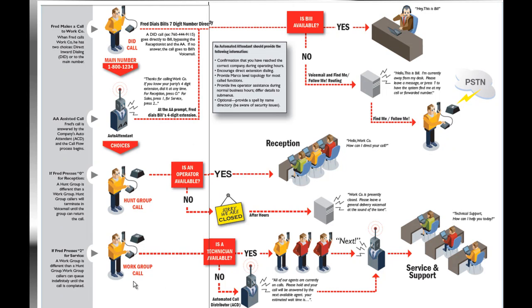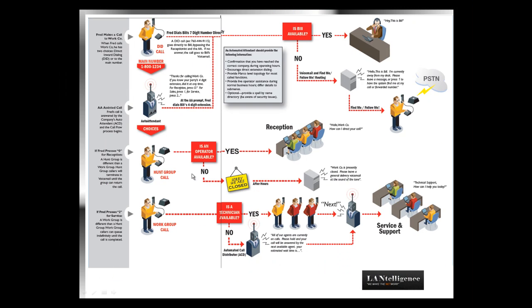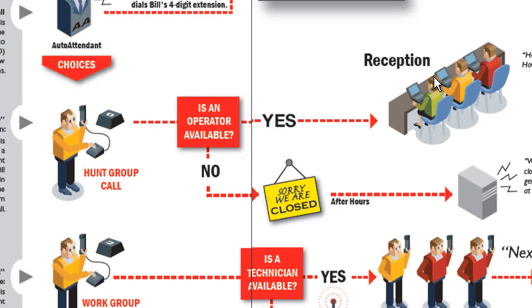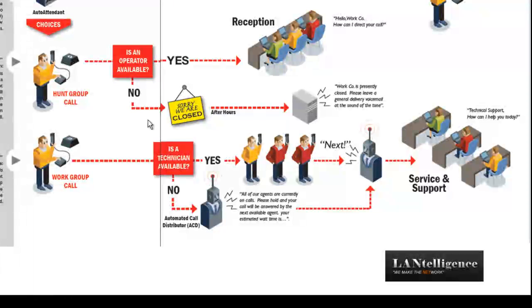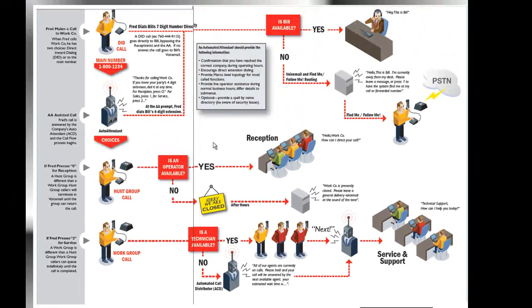Our goal is to lay out these solutions and make sure that if we're going to have an automated attendant, it is properly scripted so we can get it professionally recorded, and so we know the operating hours of your company. Keep in mind that each of these call processing solutions can be tied to a schedule. If a call comes in during business hours, it will be handled through the operator or reception hunt group, but after hours we'll route the call directly to an automated attendant. Work groups and hunt groups can have their own schedules, which can differ from the schedule applied to the automated attendant.